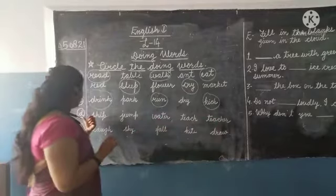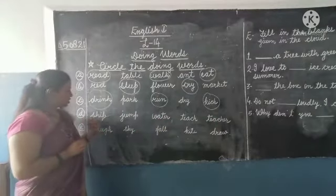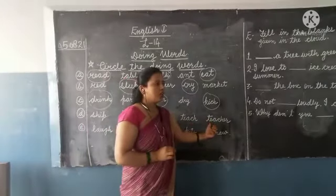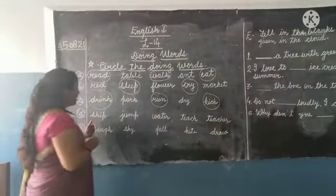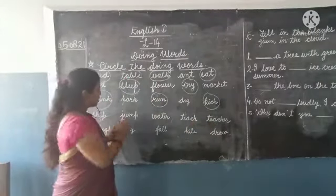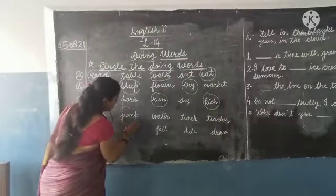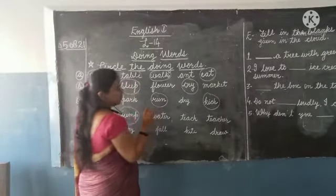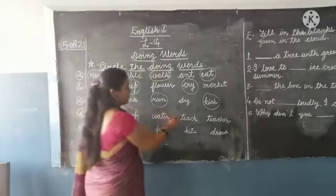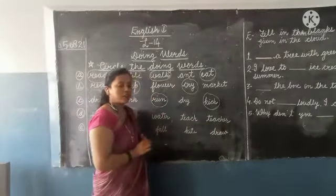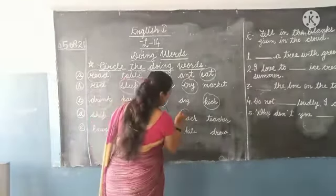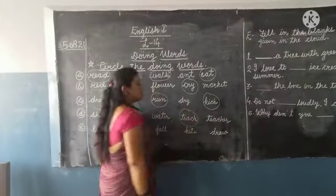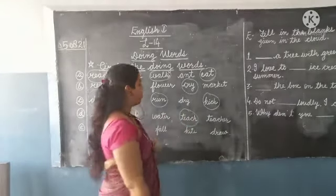The next set of words: ship, jump, water, teach, teacher. 'Ship' is a thing name. 'Jump' is a doing word. 'Water' is also a thing name. 'Teach' is also an action word, so we will circle it. 'Teacher' is a person name, so we will not circle it.